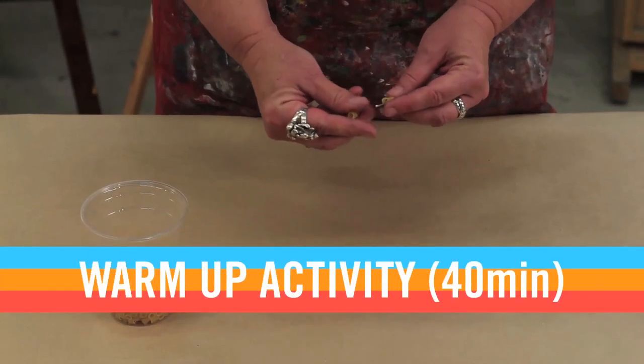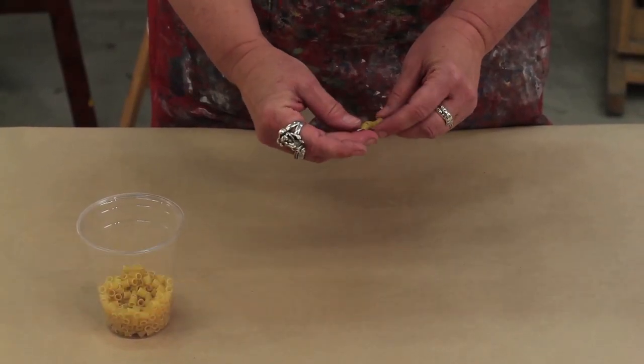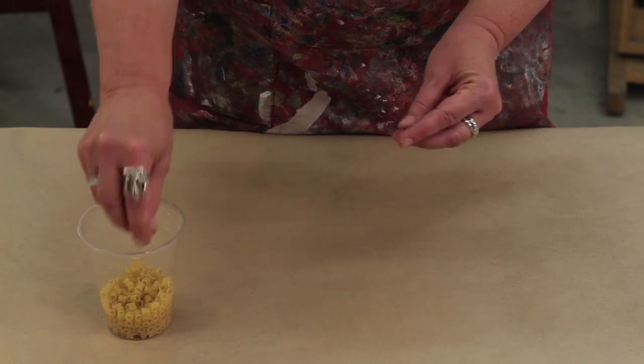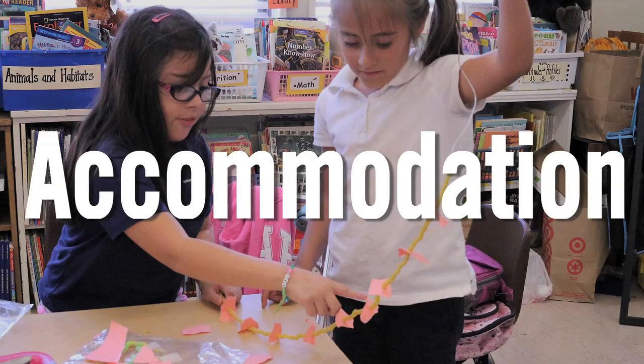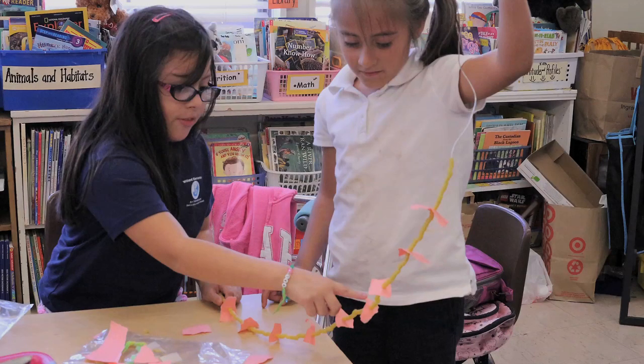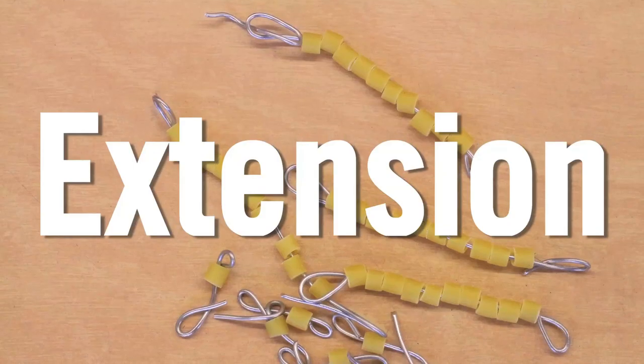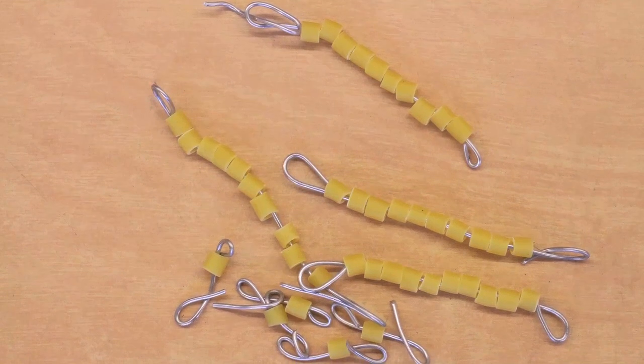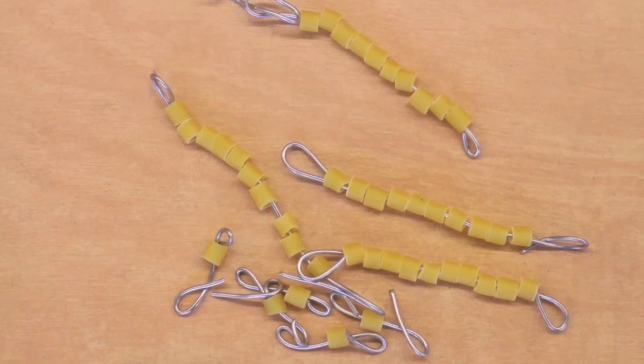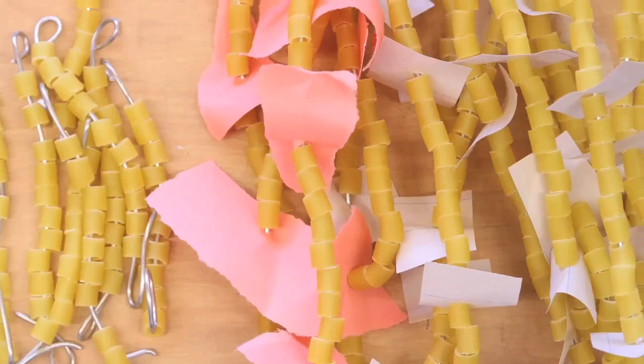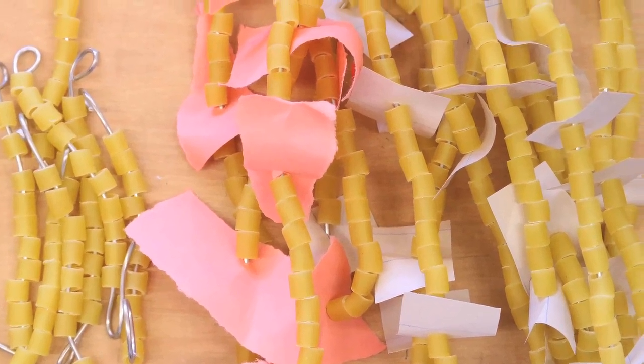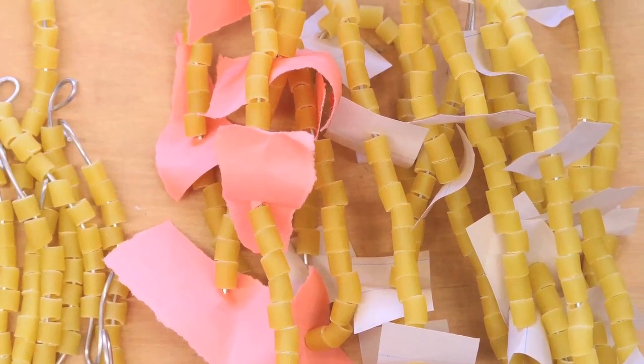Let's begin the lesson by first finishing up any macaroni stringing not completed during session one. If you have students struggling, they can work with a partner to create one number together. If students or groups finish early, they can create an even higher number by adding more beaded wires, or they can create another three digit number by putting the same digits in a different order.